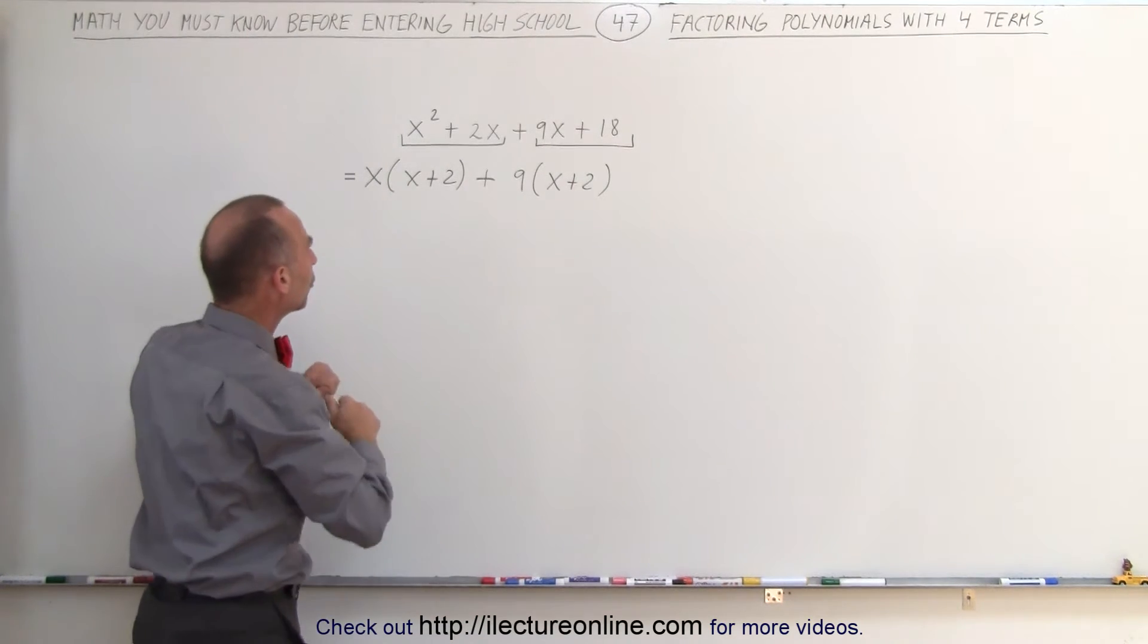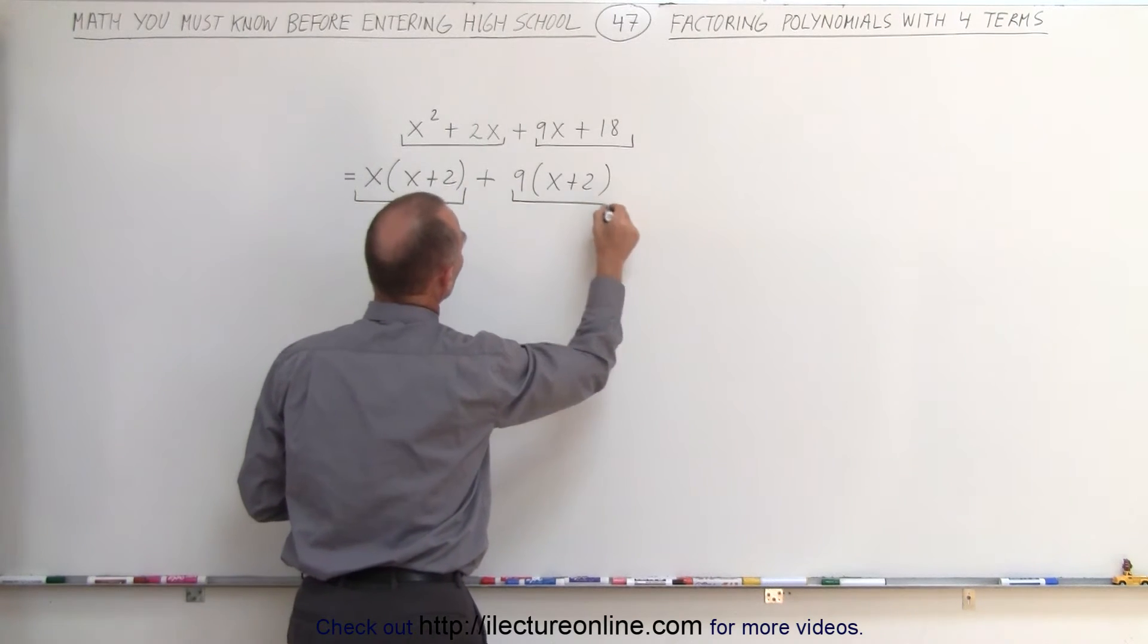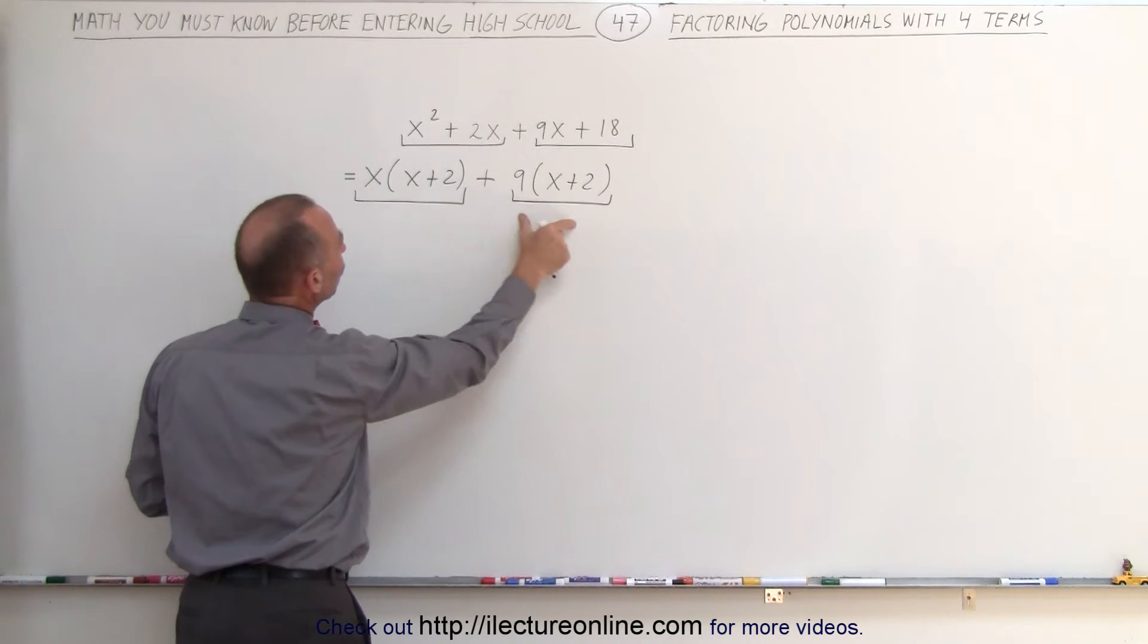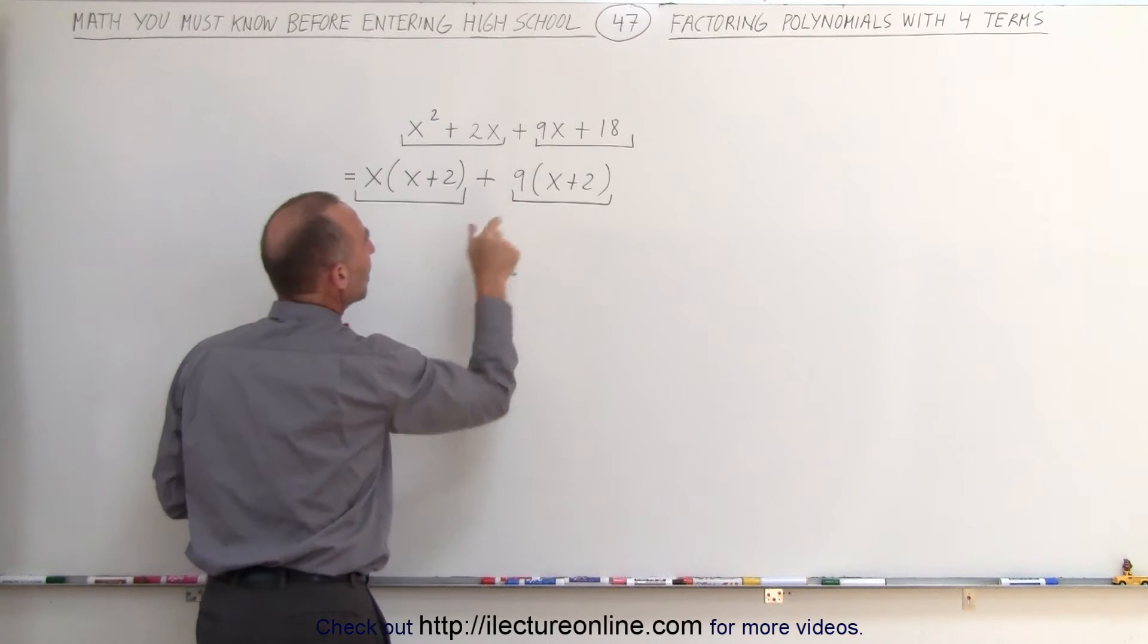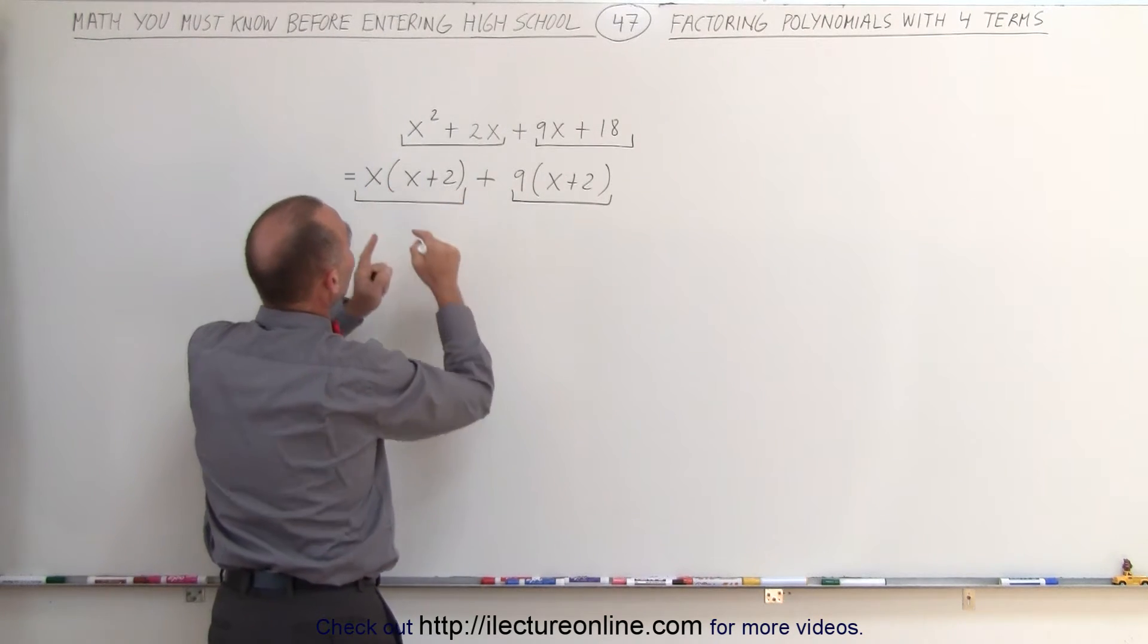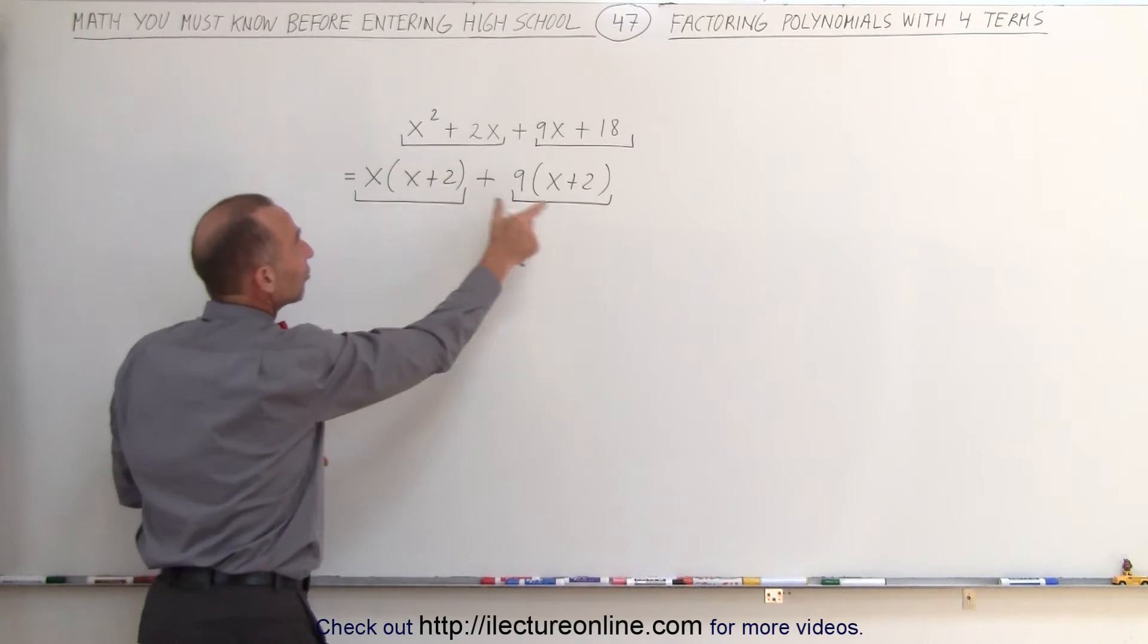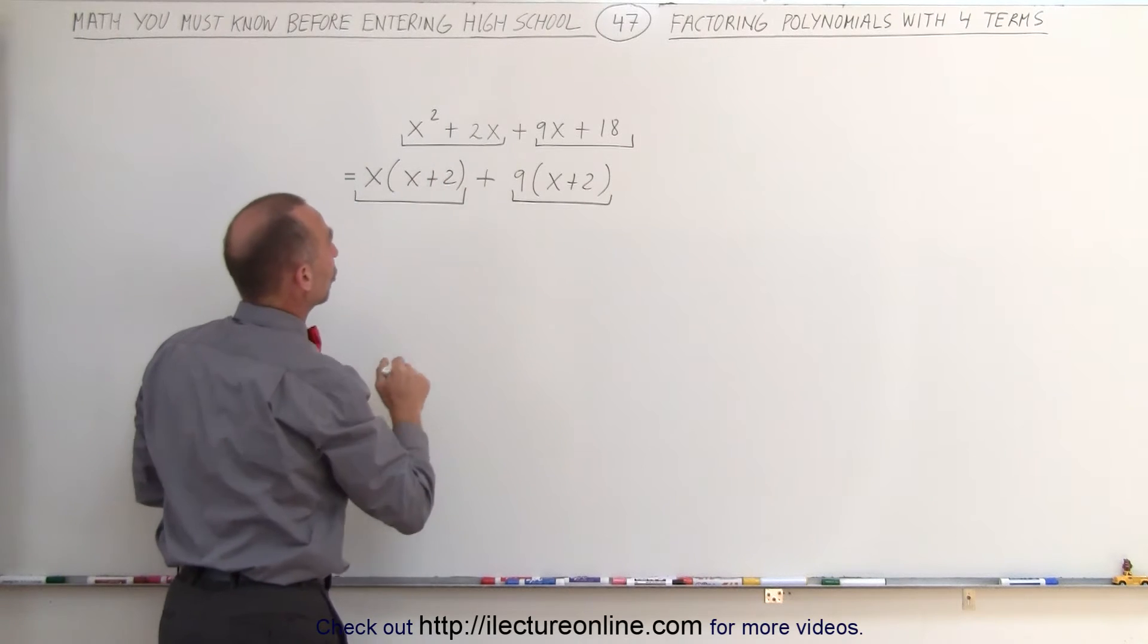Now you group them together again like this. You look at this term and you look at this term. Now you look at these two and see what is common between them. And it becomes quite obvious to see that you have an x plus 2 on the left side and you have an x plus 2 on the right side, which means we can factor out an x plus 2 out of both of these terms.